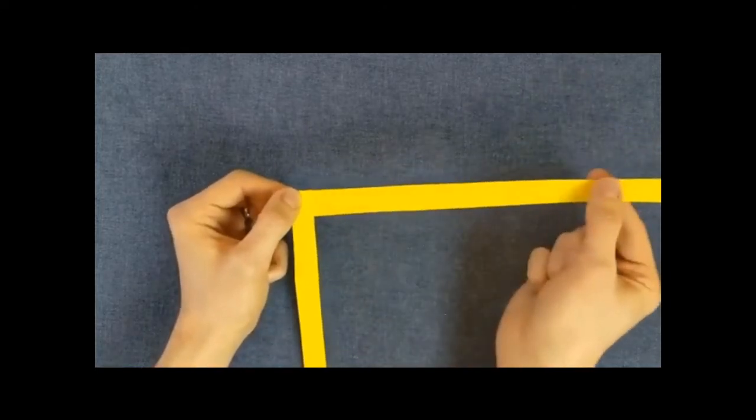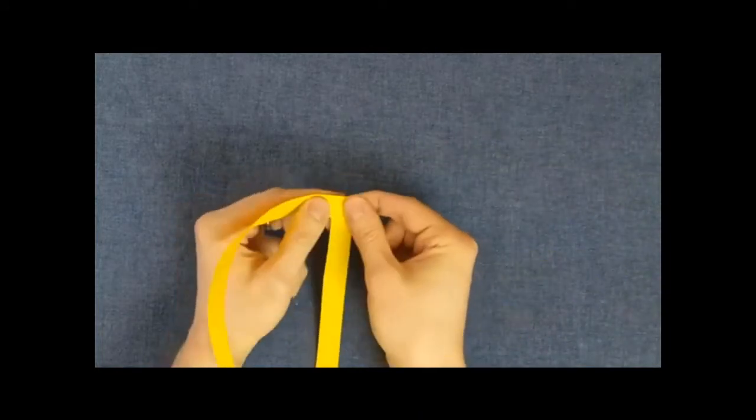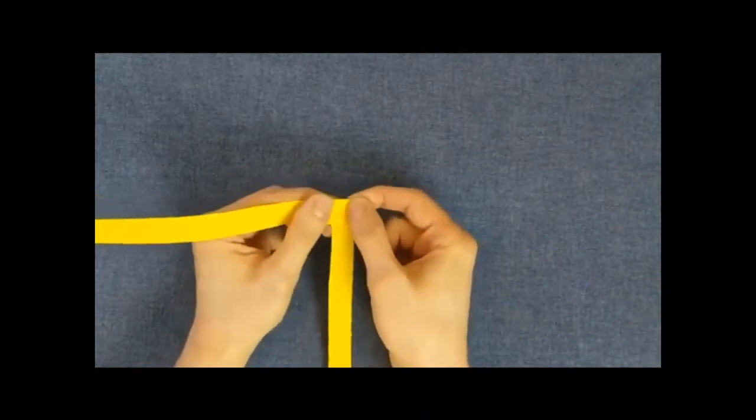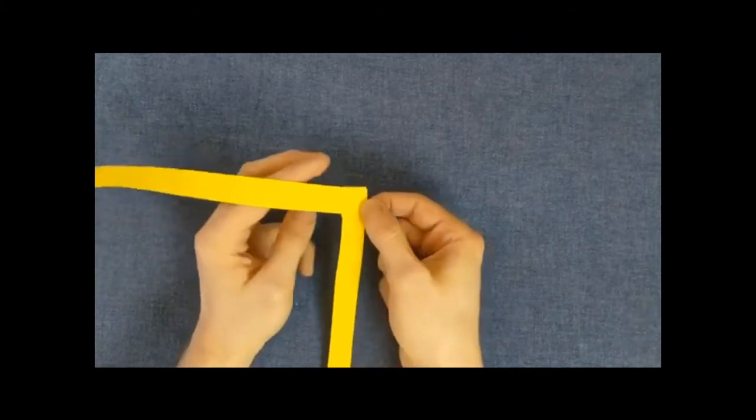Next, take the strip which goes to the right and fold it over. We're joining these two bits of paper together. You should have something which looks a bit like this.